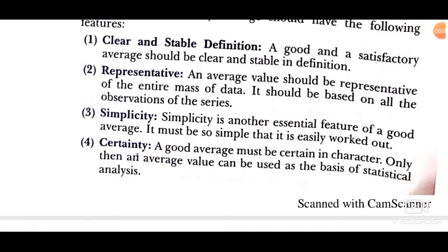Fourth: certainty. A good average must be certain and correct. Only then can an average value be used as the basis of statistical analysis. Certain means a thing which we are sure about; uncertain means which we are not sure about. So the amount of statistical data should be a sure observation — it should not be a mere assumption but an observed research value.